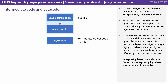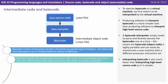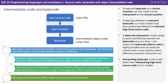To execute bytecode on a virtual machine, we first need it to be interpreted by the virtual machine. Producing software to interpret bytecode is a much simpler task than producing software to interpret high-level source code. A bytecode interpreter simply needs to parse and directly execute the bytecodes one at a time. This means the bytecode is highly portable and can easily be moved onto a new machine with a different processor instruction set. Interpreting bytecode is also much faster than interpreting high-level source code, as it's simpler.